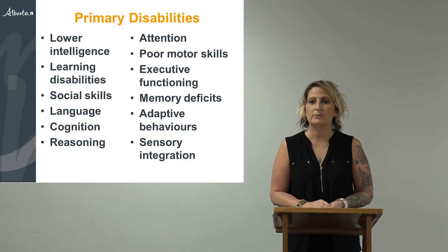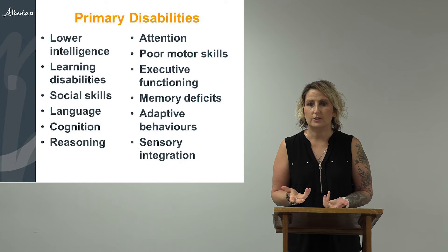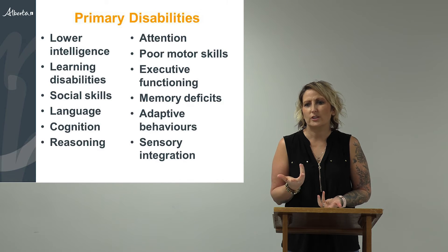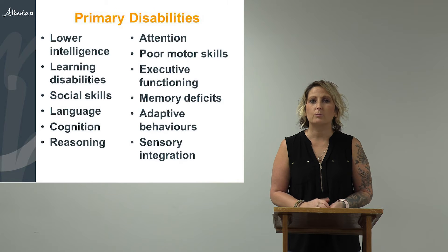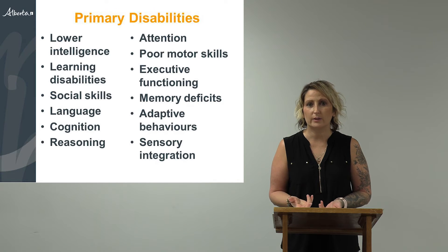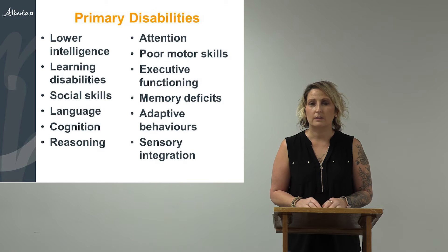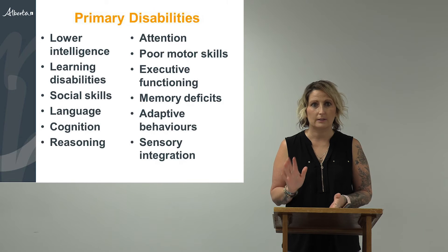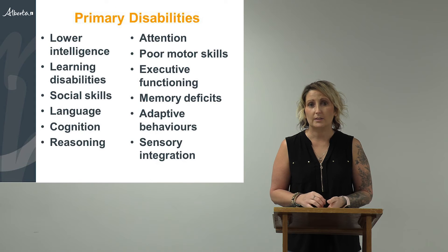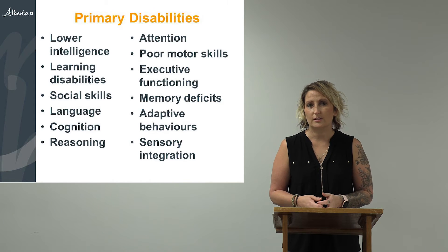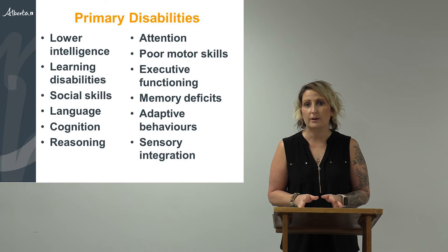Some of the primary disabilities include lower intelligence, trouble with social skills, reasoning, understanding, attention, and sensory. Think about sensory: we're in a room with lights everywhere, and if one light was flickering we'd continue on with our day like it's no big deal. But somebody with FASD wouldn't even be able to focus on the conversation — they'd be constantly looking at the light. Even the person next to them bouncing their leg, all they hear is that fabric rubbing together. Their sensory sensitivity is about 100 times higher than ours.